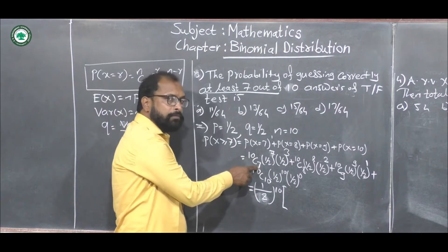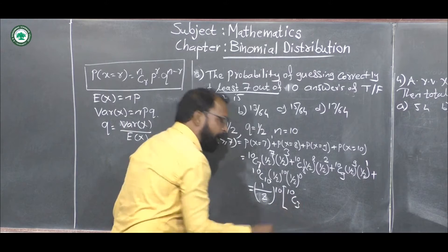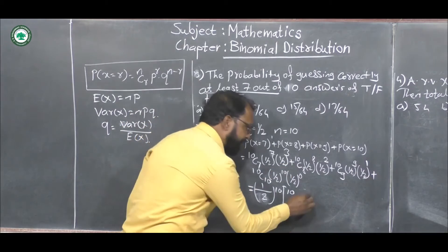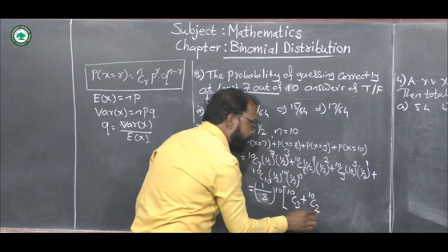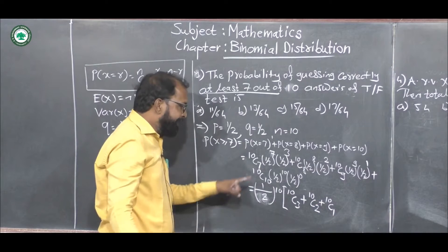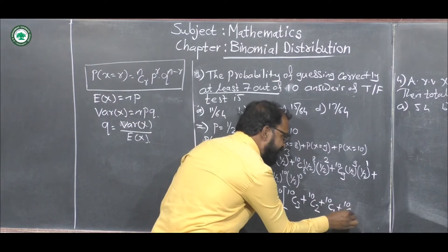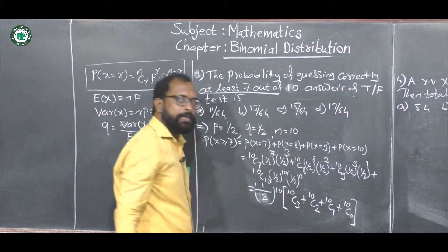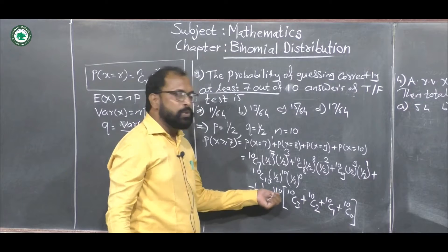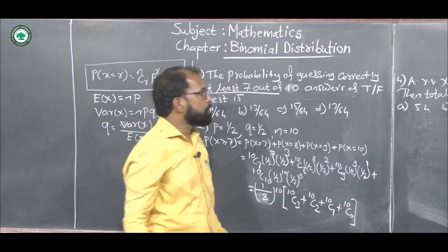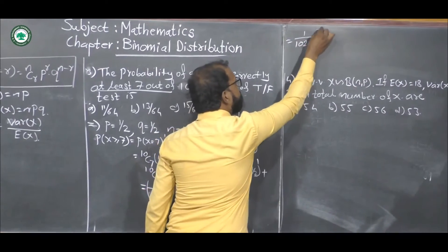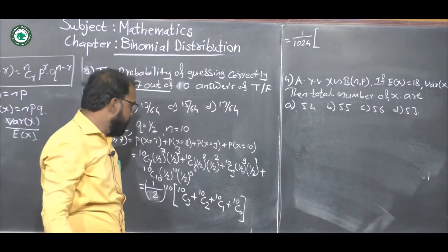Inside the bracket, 10C7 equals 10C3, 10C8 equals 10C2, 10C9 equals 10C1, and 10C10 equals 10C0, using the known complement formula. We know that 2^10 is 1024, so we write this as 1/1024 times the bracket.